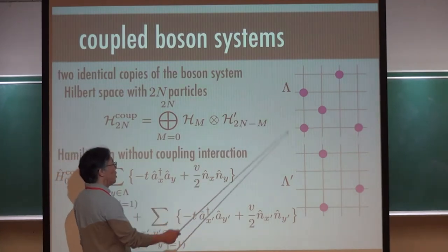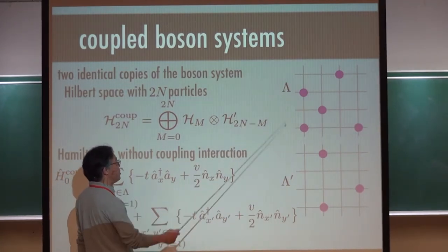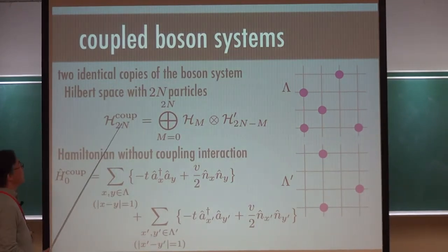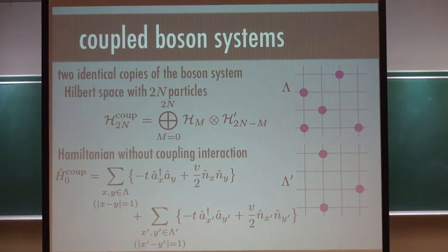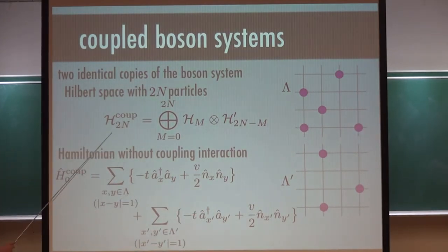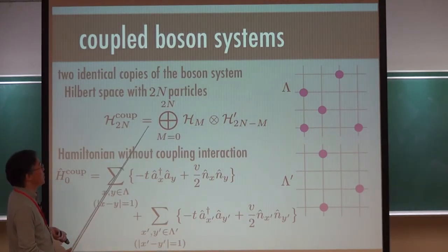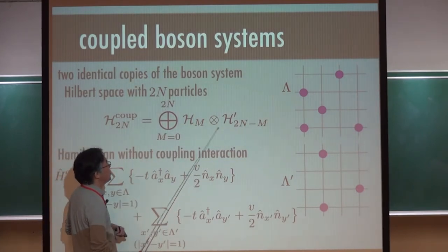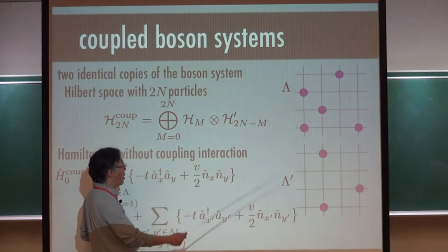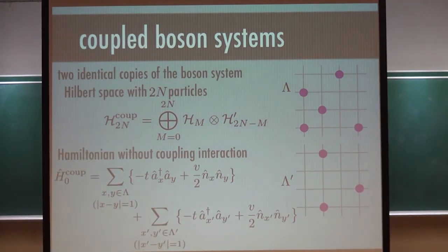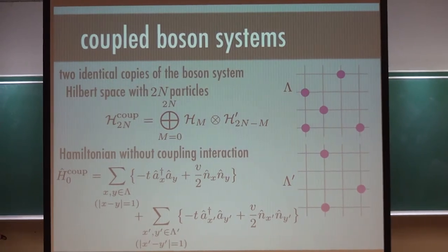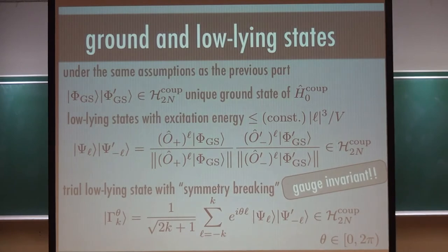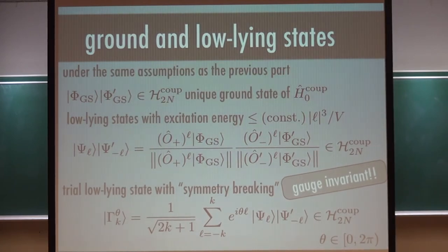I will add primes to the second system — so lambda and lambda prime are the same lattice. I consider the Hilbert space in which the total number of bosons is fixed. The physical Hilbert space is such that the total number of bosons in both systems together is always 2N. The physical Hilbert space I consider now is a direct sum over all possible M, summing over all possible ways to distribute 2N particles into the two systems.